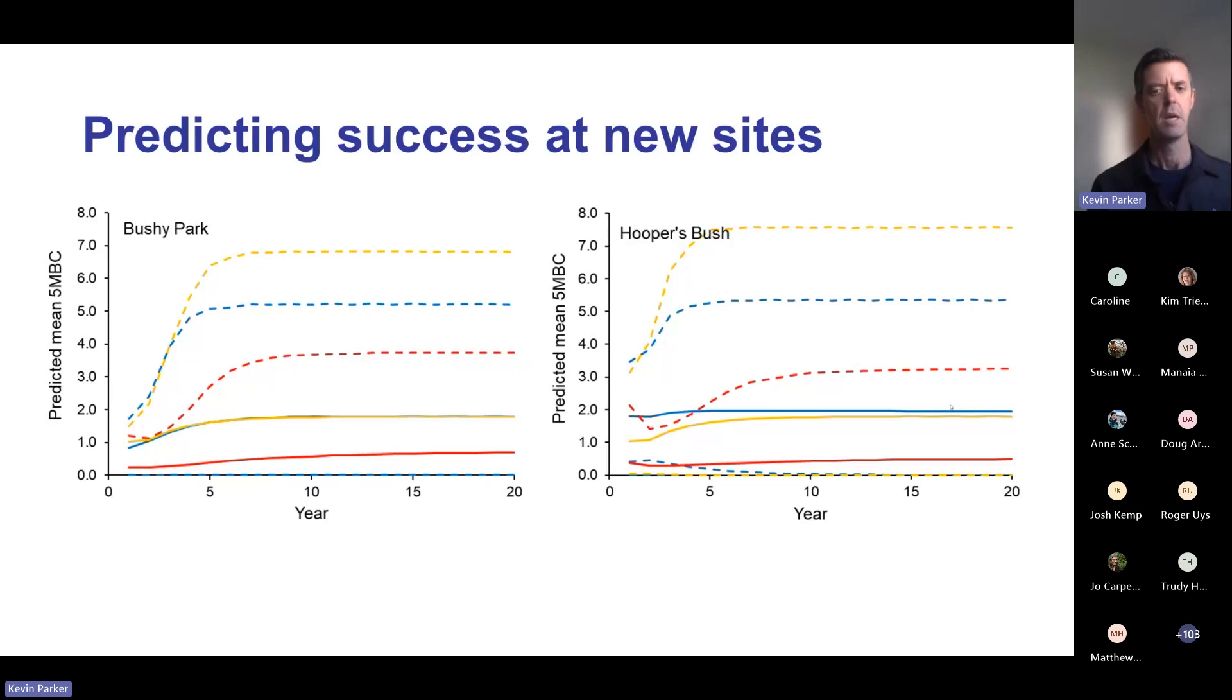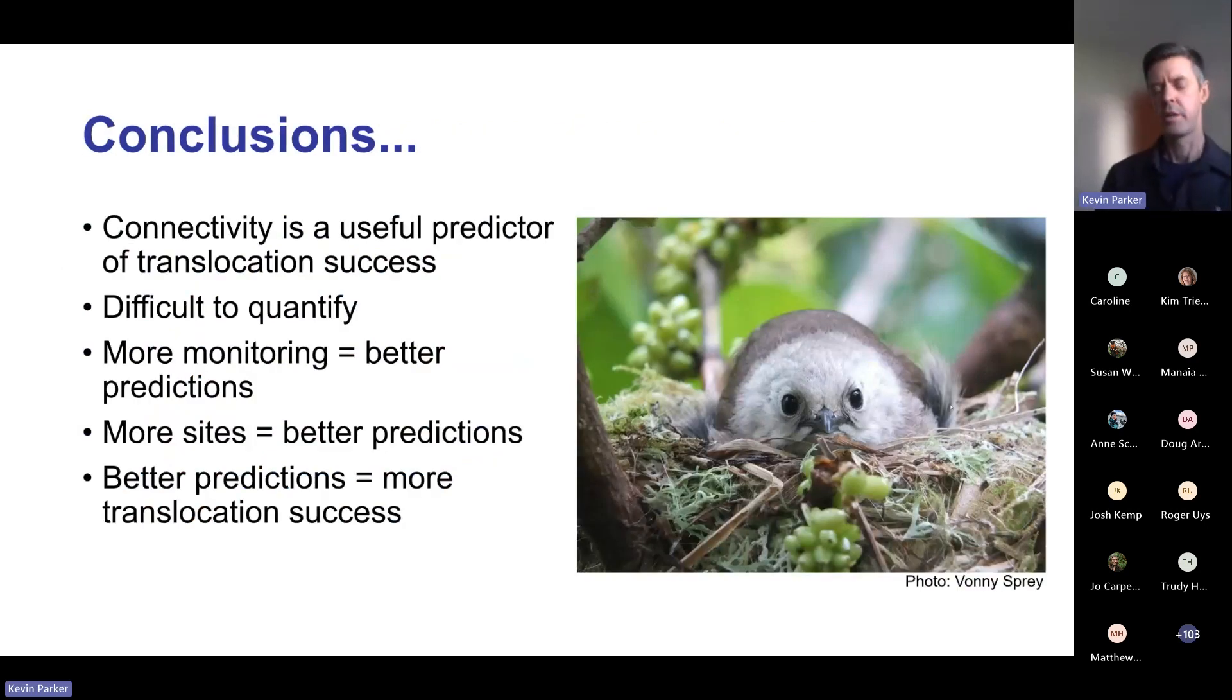In conclusion, connectivity is a really useful predictor of translocation success, but it's actually really difficult to quantify. It was a lot of work on Zoe's part to quantify the connectivity of each of these sites, and Doug made comments about banging his head against the computer in terms of modeling these data. We actually started with this study as a pilot to move into a larger multi-species project, but it ended up sucking up a lot more time than we anticipated.